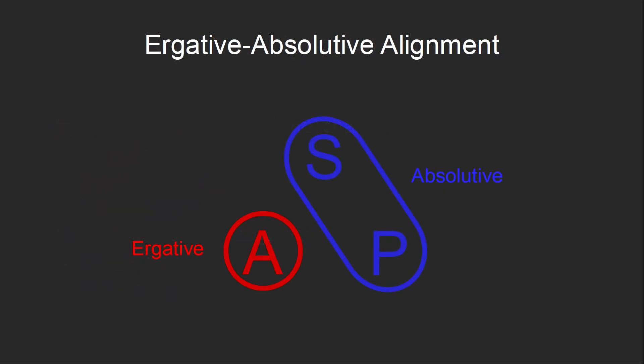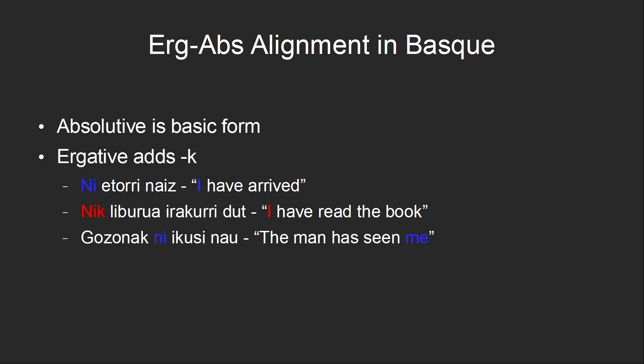Another possibility is to treat the subject and the patient alike as the absolutive case, and the agent separately as the ergative case. This is called ergative-absolutive alignment, or simply ergativity. An example of an ergative language is the Basque language, which is spoken in southern France and northern Spain. In Basque, the absolutive form of a noun is the basic form, and the ergative is formed by adding a suffix to this. For example: 'I have arrived.'